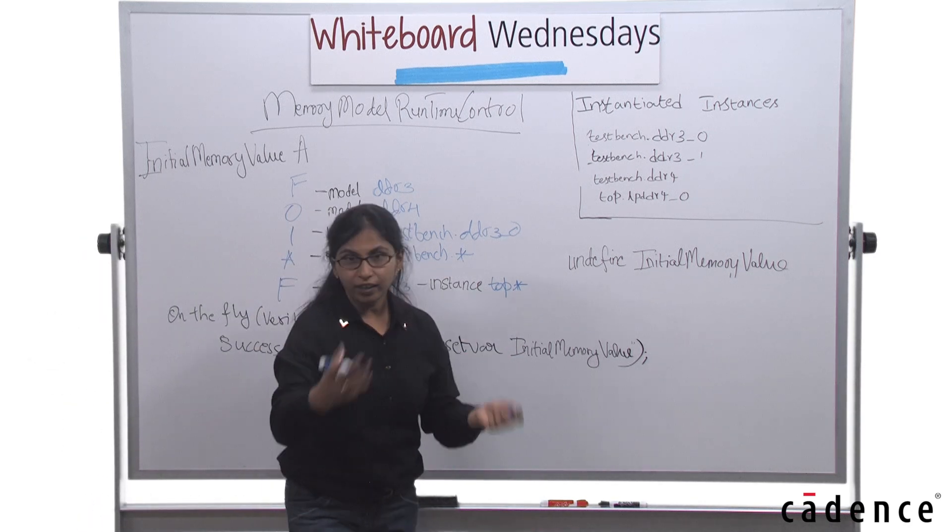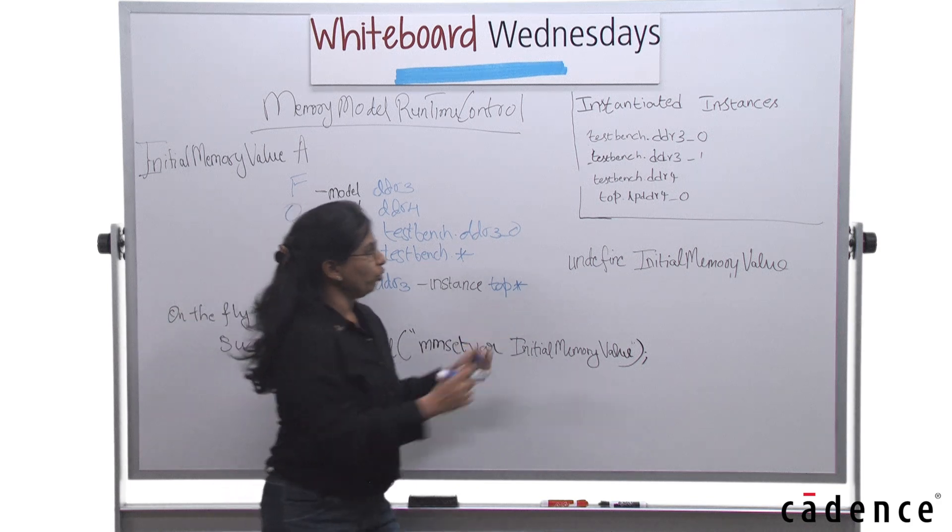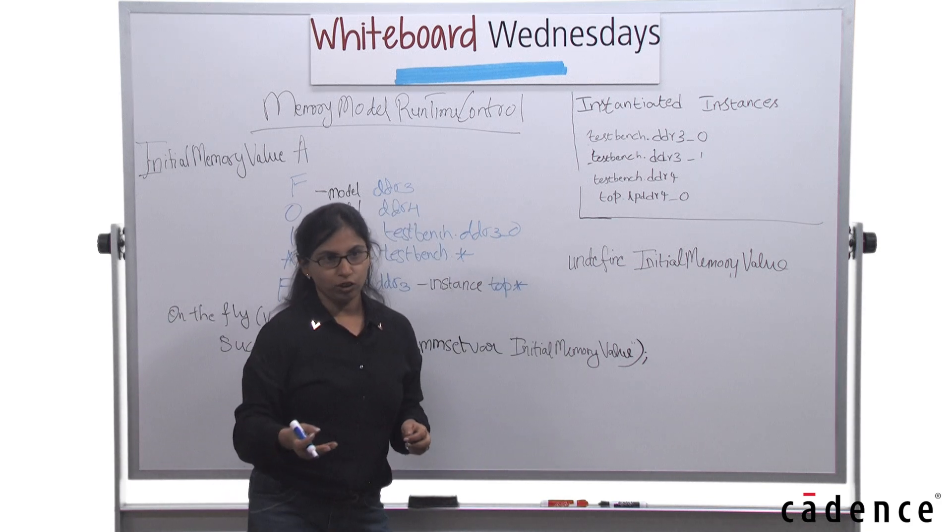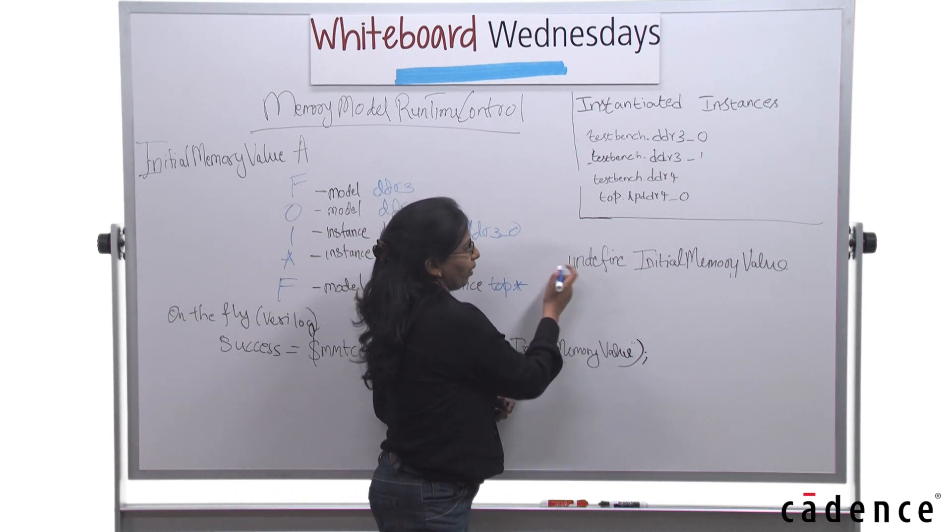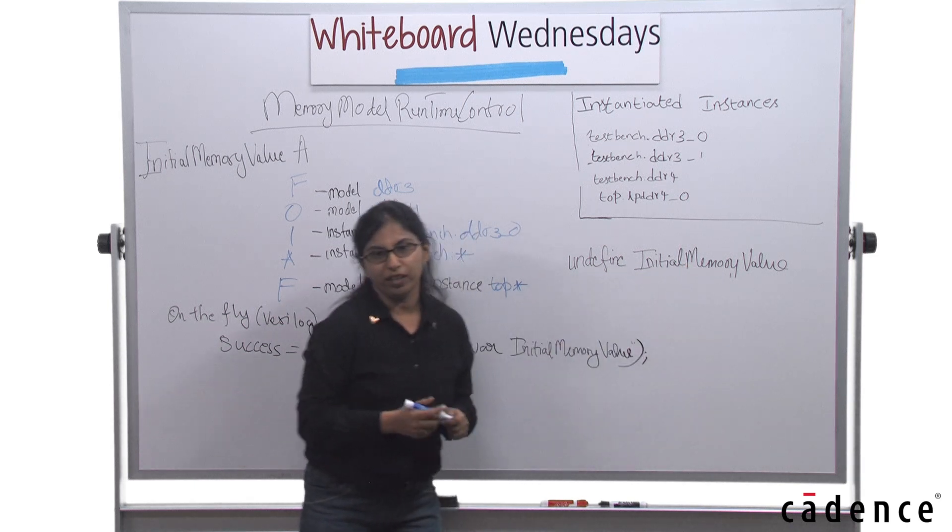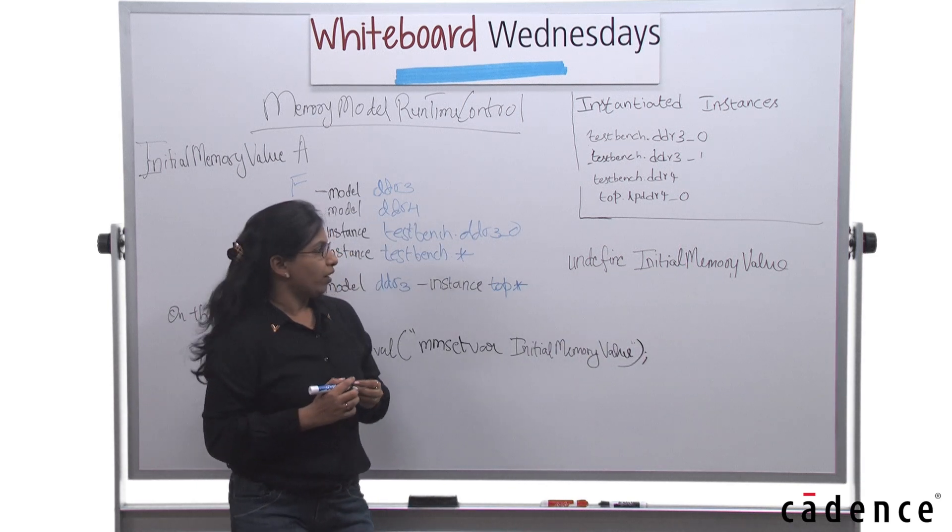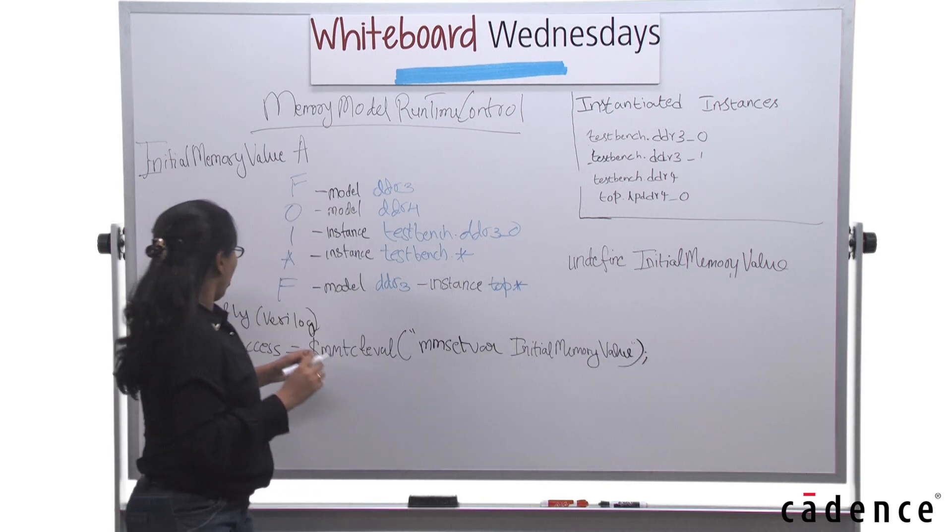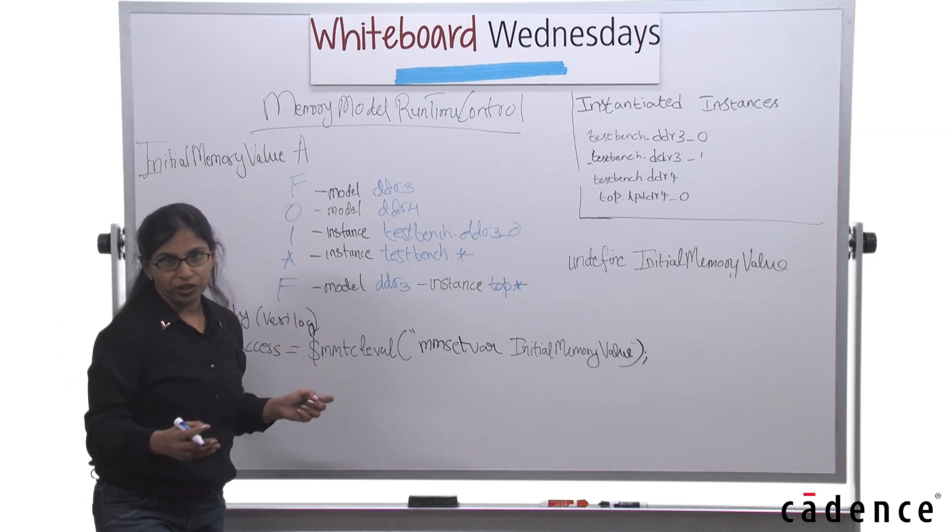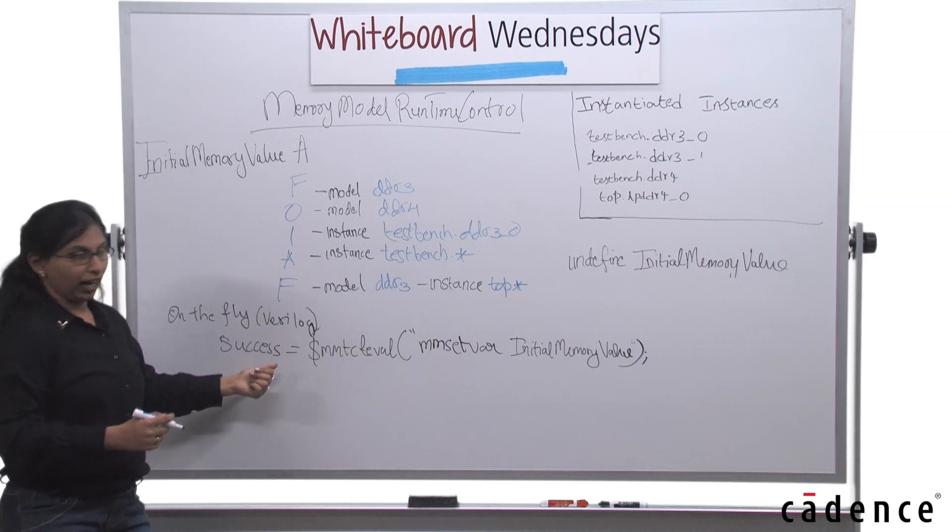So you could use a combination of model and instance together like we have shown here. Let's assume you want to undefine the initial memory value, whatever you've previously set in your simulation. That could just be done by saying undefine initial memory value in your testbench.